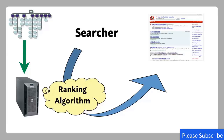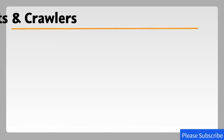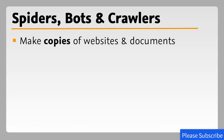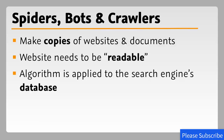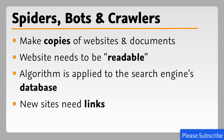The searcher, when they type in a search, is processed through the search engine's database, through the ranking algorithm, and then results come out. Quick overview: spiders, bots, and crawlers make copies of your websites and documents. Your website needs to be readable or seeable to a search engine, and then the algorithm is applied to the documents downloaded to the database. If you have a brand new website, the most important thing you can do is start building links to it. Search engines find new websites by following links around the internet, and once they find you, they visit frequently to ensure they have the most up-to-date copy.